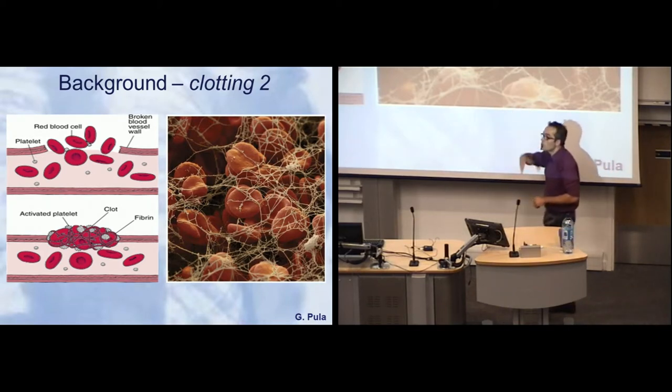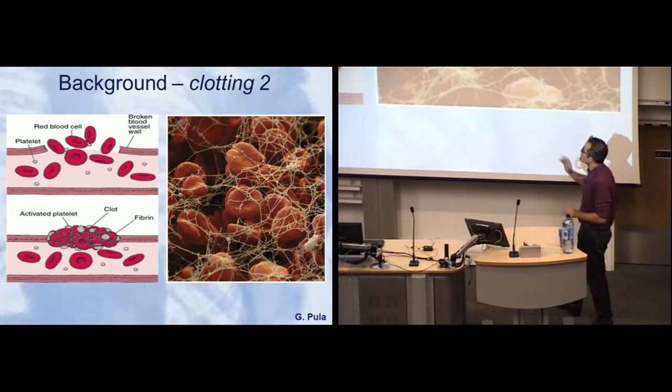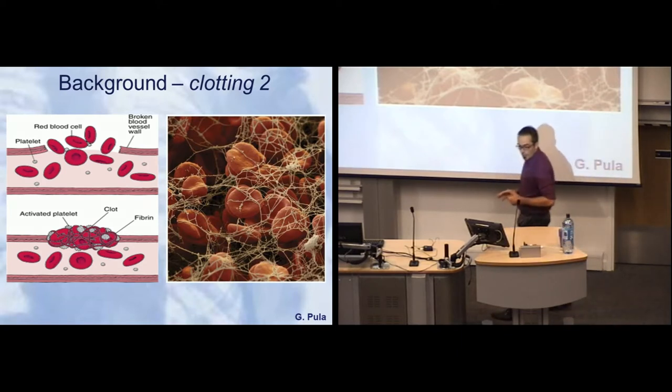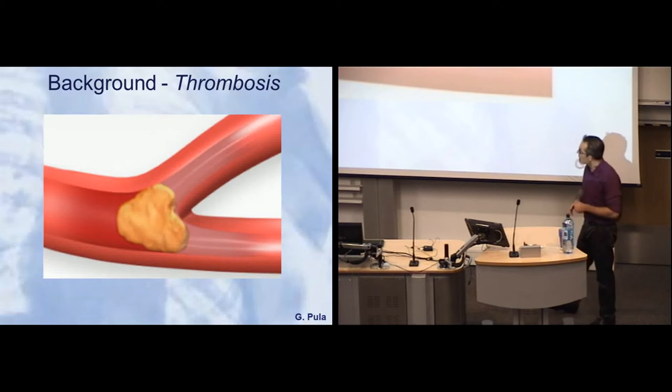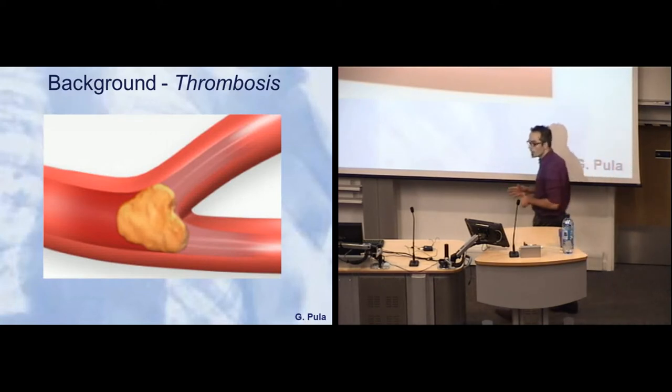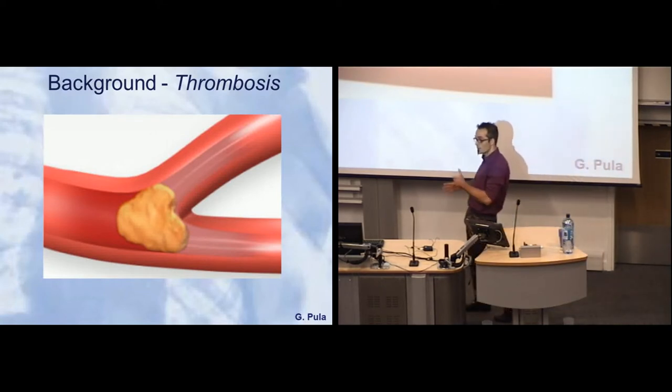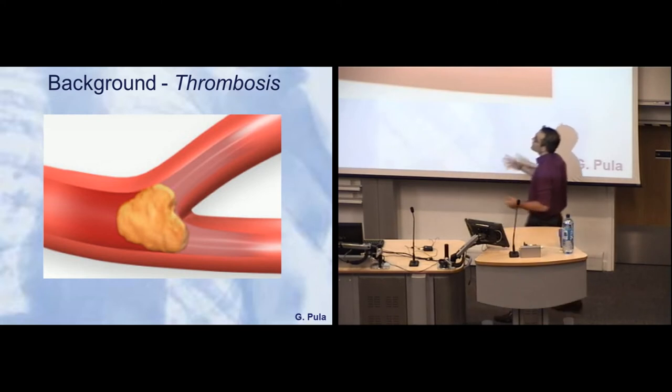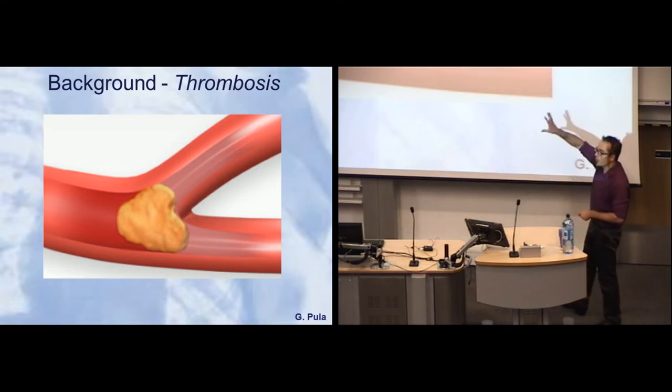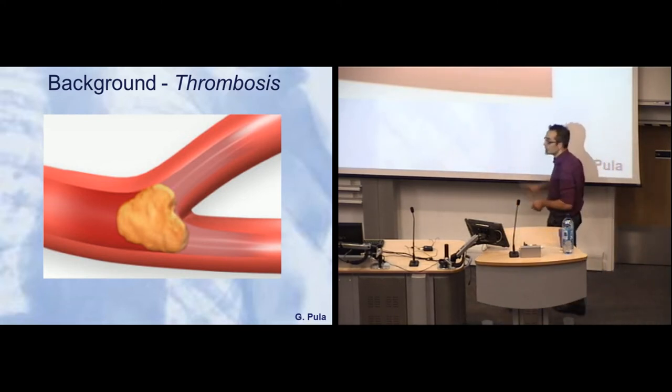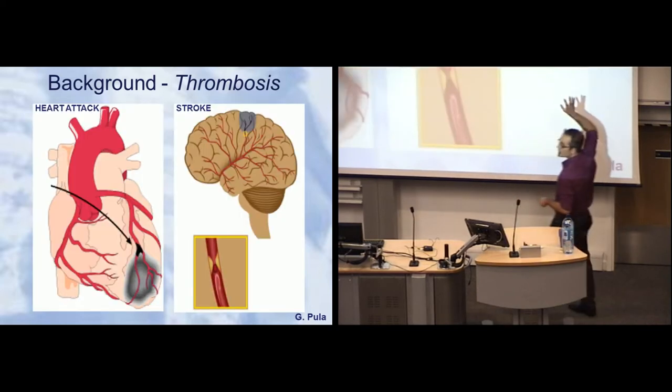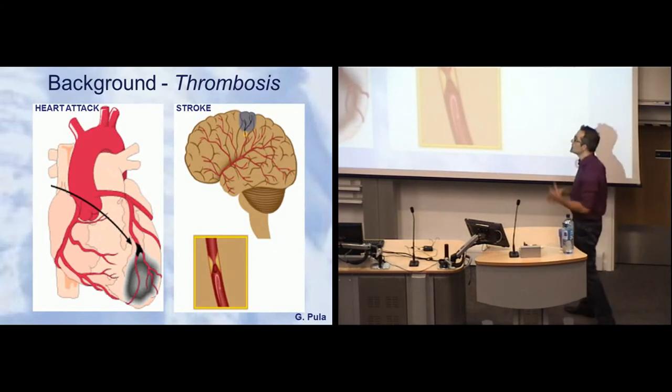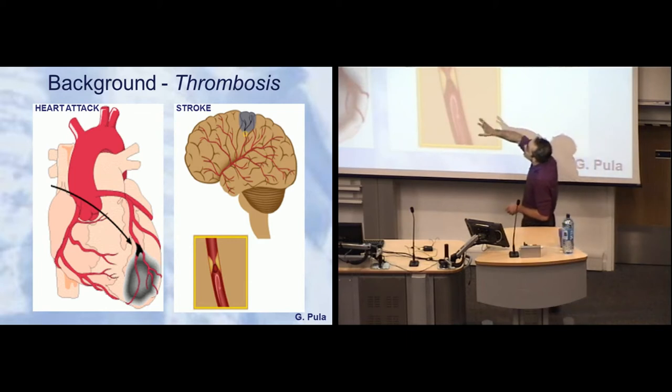Unfortunately, sometimes platelets become over-enthusiastic about their role, and we help them along by bad lifestyle choices like bad food, smoking, and alcohol. They form a clot where and when in the bloodstream it's not needed, which leads to occlusion of a blood vessel and starvation of the tissues downstream of oxygen and nutrients. The tissues die. When this happens in the heart, we have heart attacks. In the brain, we have strokes—very serious diseases.